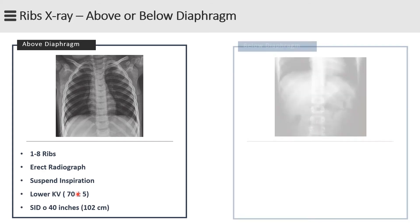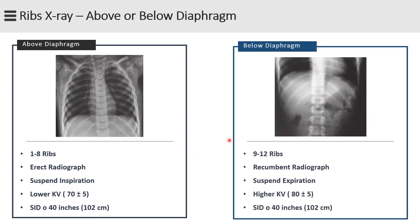To demonstrate the ribs below the diaphragm, you should first take the radiograph with the patient recumbent, mostly supine. This allows the diaphragm to rise to the highest position and results in less thickness of the abdomen, as the abdomen flattens when the patient is lying down, providing better visualization of the lower ribs through abdominal structures. Exposure should be done at the end of suspended expiration. A medium kilovoltage of 80 to 85 should be considered, as the lower ribs are surrounded by dense soft tissues and a higher kilovoltage will ensure proper contrast.